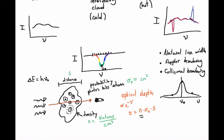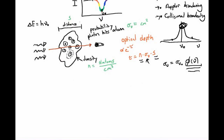The number of atoms and the distance through the cloud don't depend on frequency, so the only parameter that really determines whether a photon gets absorbed as a function of frequency is this cross-sectional area. We can express sigma-nu as the product of two things: the cross-sectional area at line center — the probability of absorption right at line center — times the line profile function phi, which captures the variation in absorption probability as a function of frequency. So all our frequency dependence is encapsulated in this line profile function, which we could calculate from the natural line width, Doppler broadening, or collisional broadening.